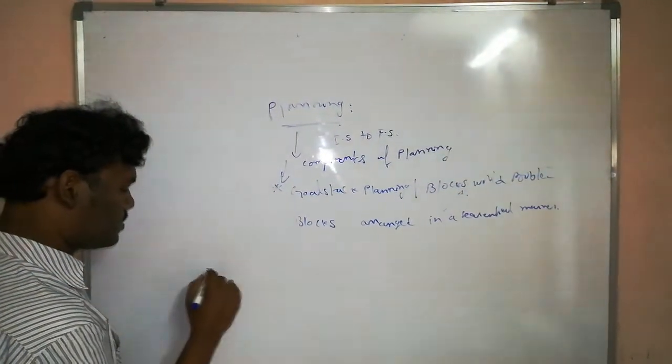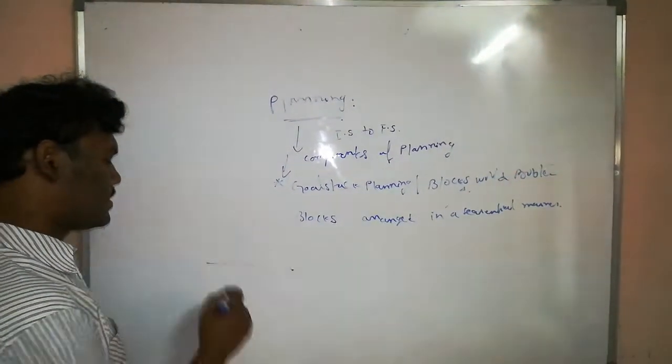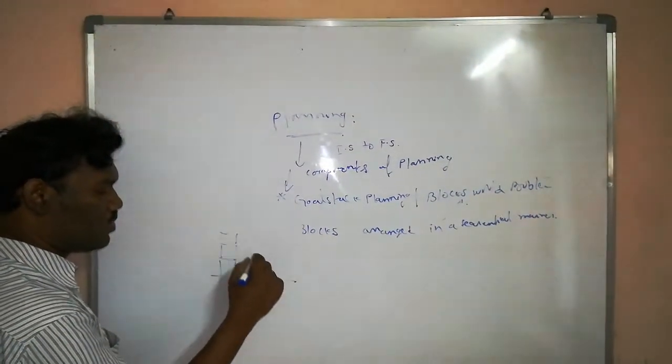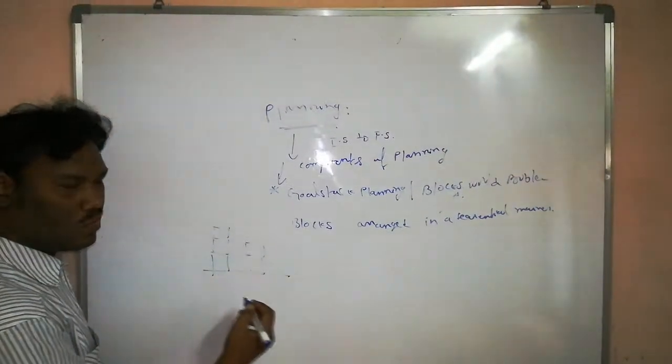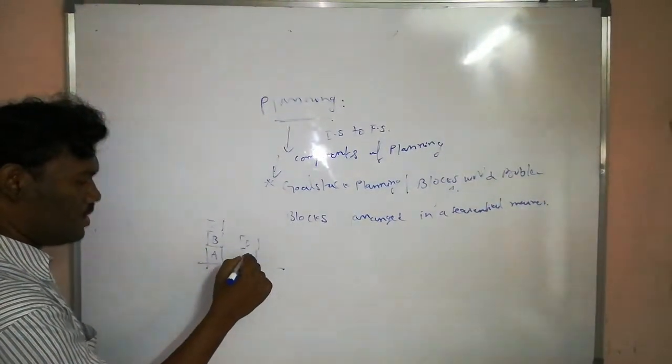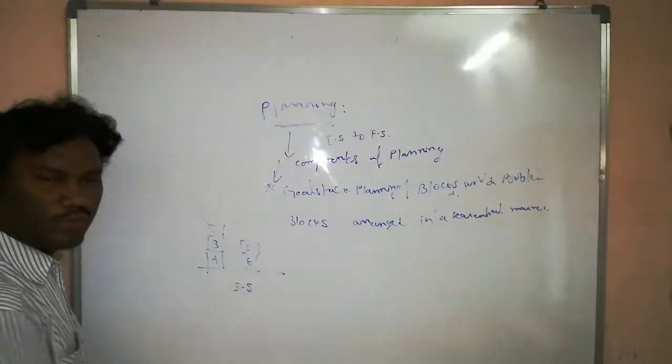So that means here some flat surface, the flat surface having some set of blocks. So now we are arranging these blocks according to the output. For example this block is name is A, B, C, D, E. This is the initial state of the blocks.